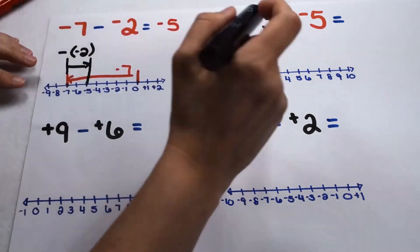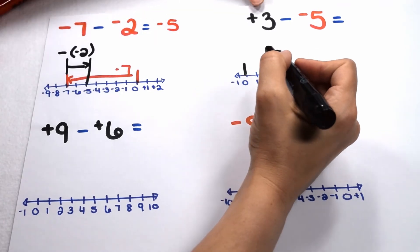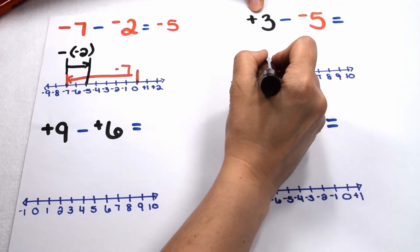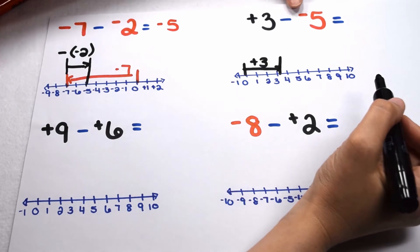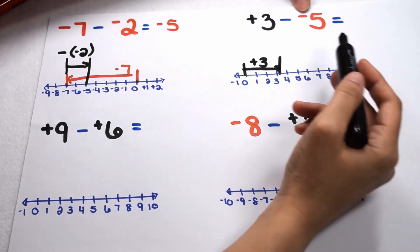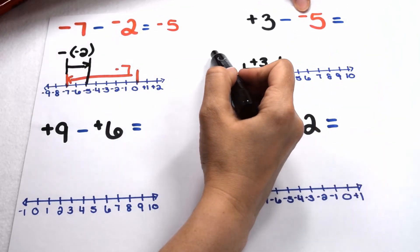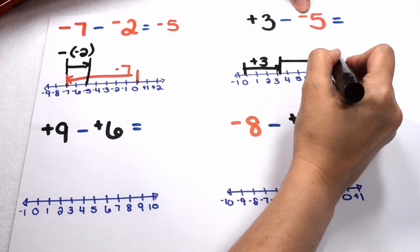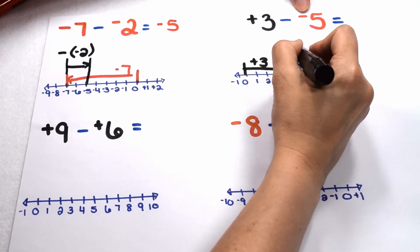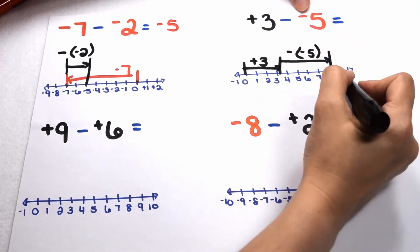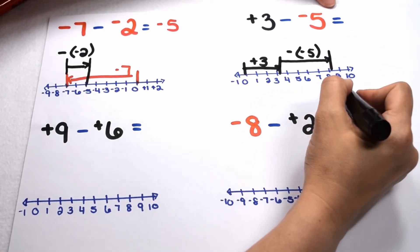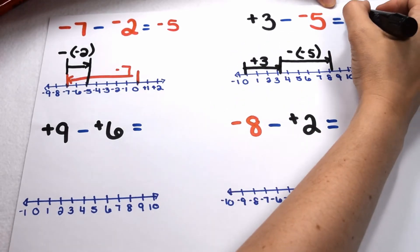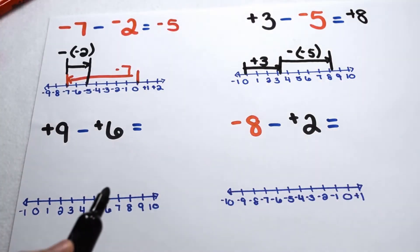In our next example, I'm going to start at 0. Positive 3 is going to send me three places to the right. I need to do the opposite of negative 5. Negative 5 would normally send me back to the left, but doing the opposite of that means I'm going to want to go five places to the right. I'm going to land at positive 8. So positive 3 minus negative 5 is going to land me at positive 8.